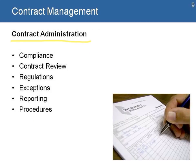Contract administration is about ensuring compliance — that everybody on the team and all the processes the project uses are in compliance with the donor requirements. There are steps for contract reviews, opportunities to make changes or improvements, and making sure that we're following regulations, including local regulations. This also covers looking at exceptions, understanding how we manage exceptions in the contract, reporting needs, and different procedures to manage and administer our contract.